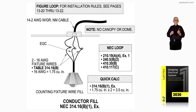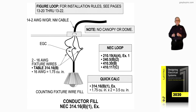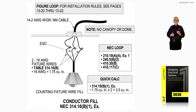Is the fixture a fluorescent fixture? Is it an incandescent fixture or luminaire? It's shown that it is a luminaire with fixture wire being used to connect to the branch circuit in accordance with 314.16B1 exception. And that's what this figure 12-3 is illustrating as we now move on to the next illustration.